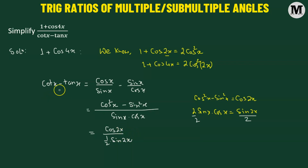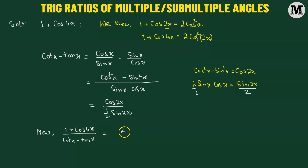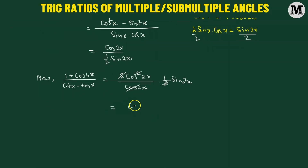Now let's substitute these values back into our original expression. We have 1 plus cosine of 4x divided by cotangent of x minus tangent of x. The numerator, 1 plus cosine of 4x, becomes 2 times cosine squared 2x. The denominator, cotangent of x minus tangent of x, becomes cosine of 2x divided by one-half sine of 2x, which means we multiply by one-half sine 2x. The 2s and one cosine 2x factor cancel, leaving us with the product cosine of 2x times sine of 2x.